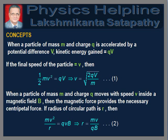When a particle of mass m and charge q moves with speed v inside a magnetic field B, then the magnetic force provides the necessary centripetal force and the particle moves in a circular path of radius r = mv / (Bq).